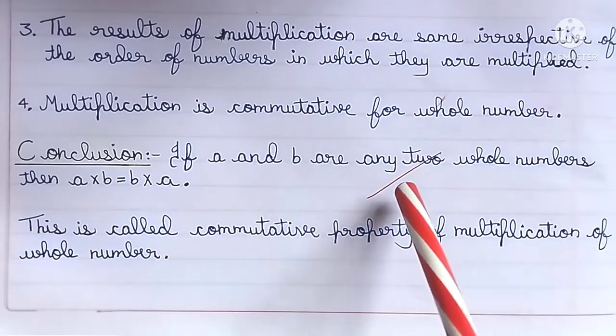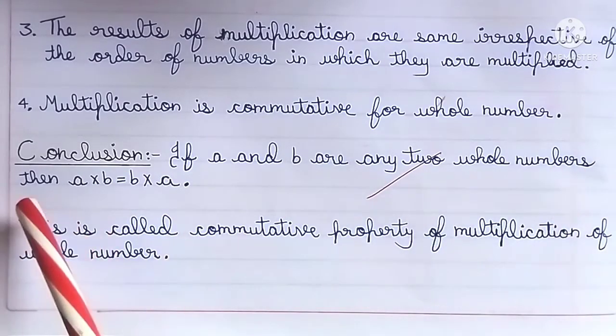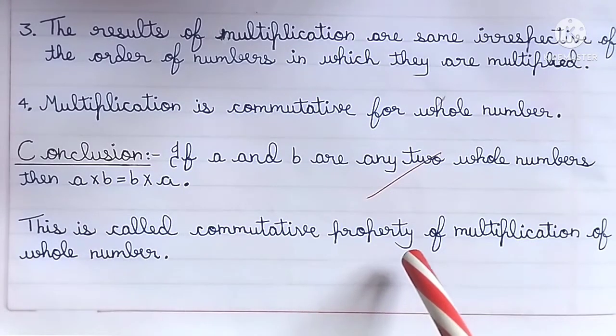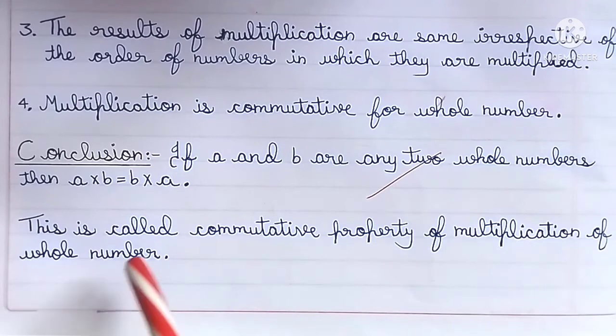Conclusion: If a and b are any two whole numbers, then a × b = b × a. This is called the commutative property of multiplication of whole numbers.